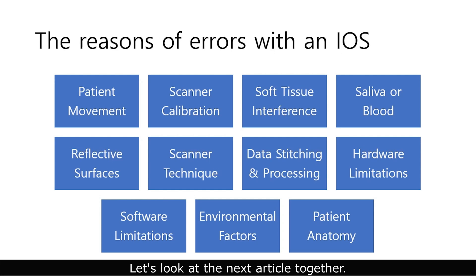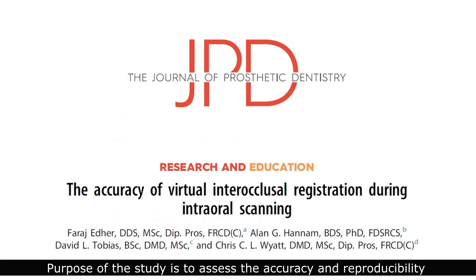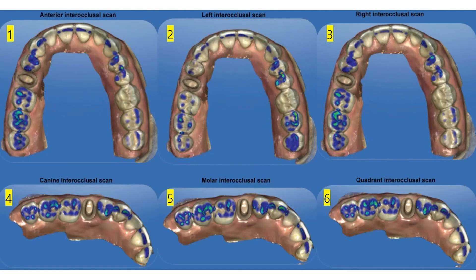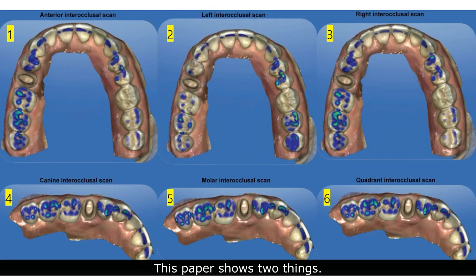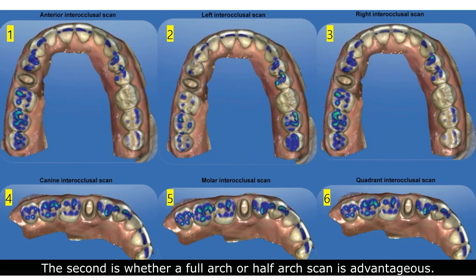Let's look at the next article together. The purpose of this study is to assess the accuracy and reproducibility of virtual inter-occlusal registration procedure. This paper shows two things: first, where to scan when only one bite scan is available, and second, whether a full-arch or half-arch scan is advantageous.